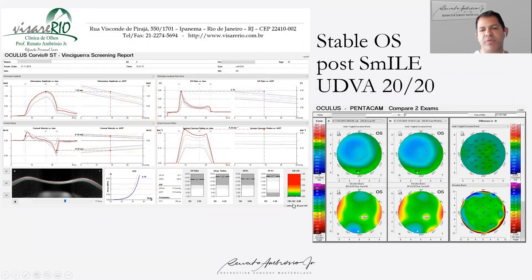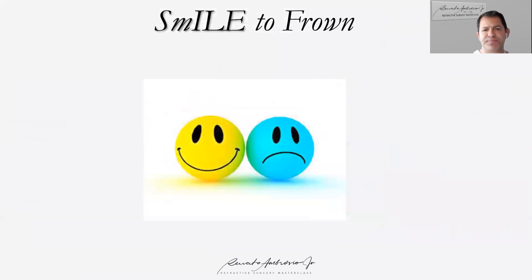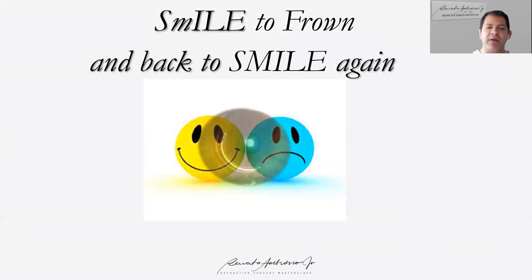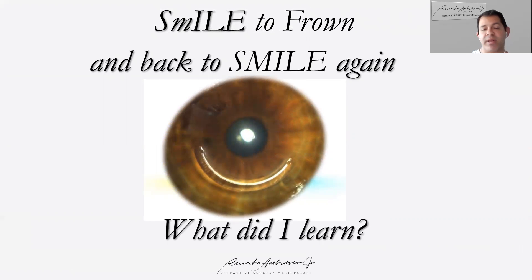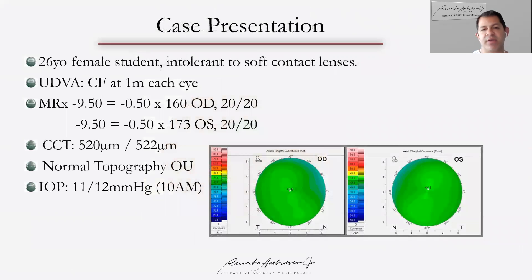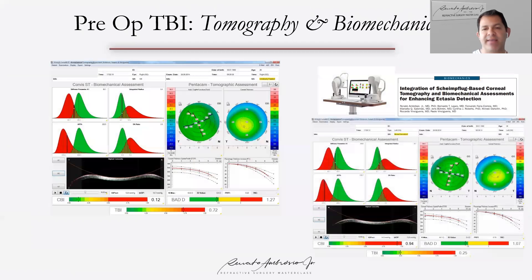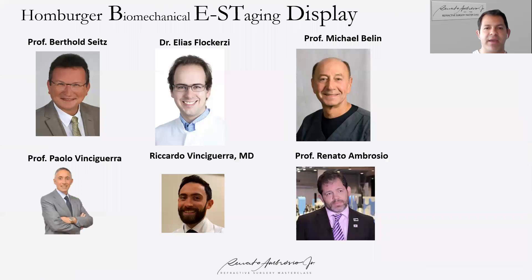This is a nice work by Ricardo Vinciguerra for enhancing the detection of ectasia after laser vision correction — covering both LASIK, PRK, and SMILE. This patient went from frown to SMILE again. What I learned is that I could have prevented the ectasia if I had the TBI available at that time. The TBI was not available then, but the data was available, and back-calculation shows ectasia susceptibility in the right eye. So this patient would probably have been a better candidate for a phakic IOL.